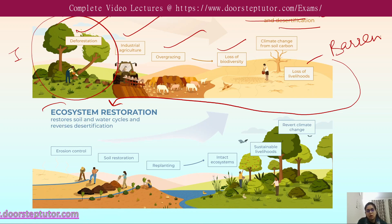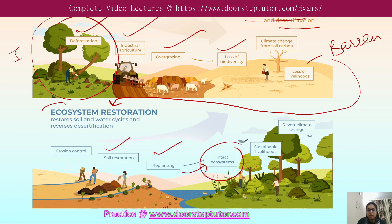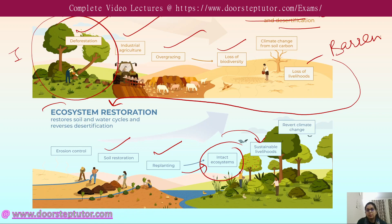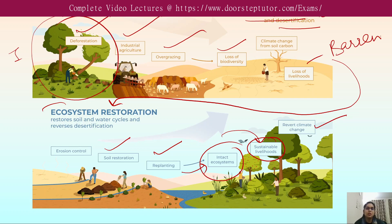To restore the ecosystem, we must first find out the causes. Then soil restoration practices and replanting of plants convert the area into an intact ecosystem. After the introduction of key species or pioneer species, sustainable livelihoods become possible and climate change is reverted.